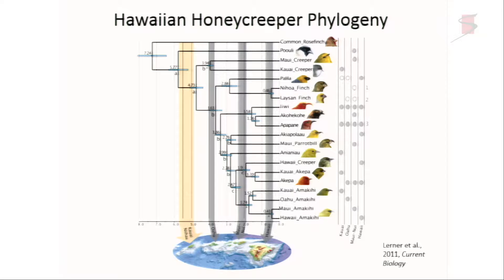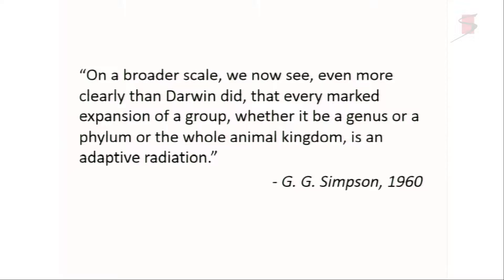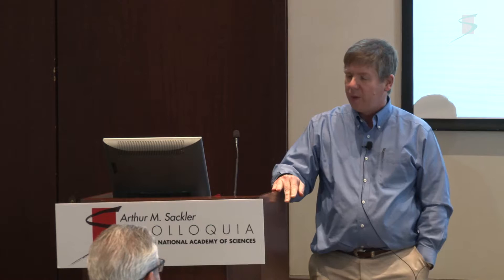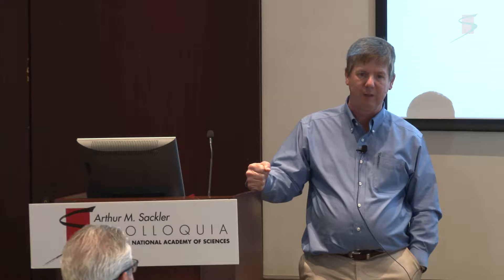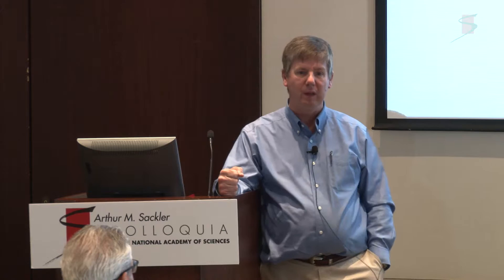The Hawaiian honeycreepers are another example of the diversification of morphologies that you get when a single species winds up in a place like Hawaii. George Gaylord Simpson in 1960 argued: 'On a broader scale we now see, even more clearly than Darwin did, that every marked departure from a group — whether it be a genus or a phylum or the whole animal kingdom — is an adaptive radiation.' Simpson's argument is that the history of life is driven by adaptive radiations, which are driven by ecological opportunity. Their fundamental argument is that the critical issue is not the supply of novel morphologies, but rather their ecological success.